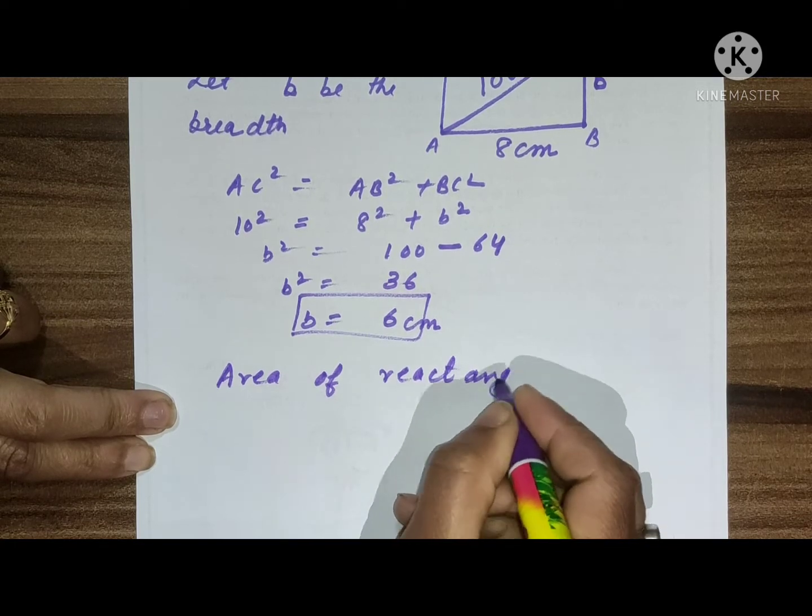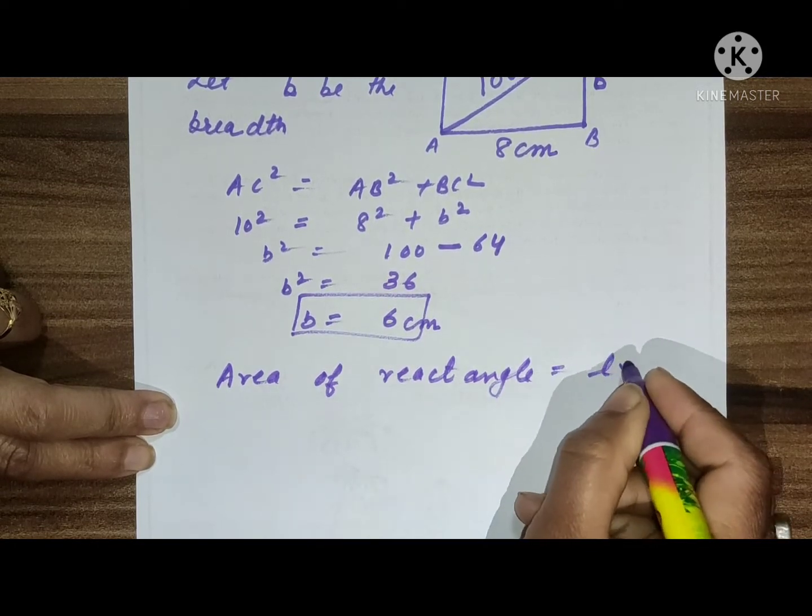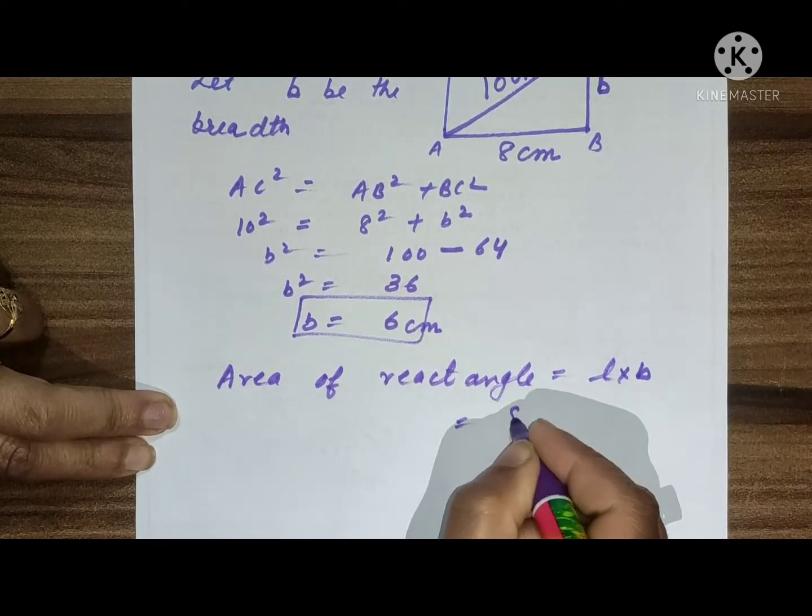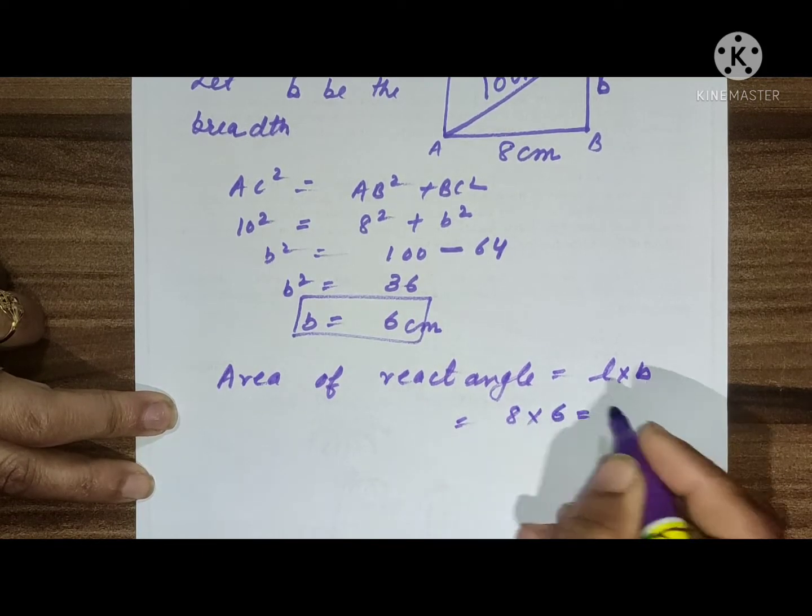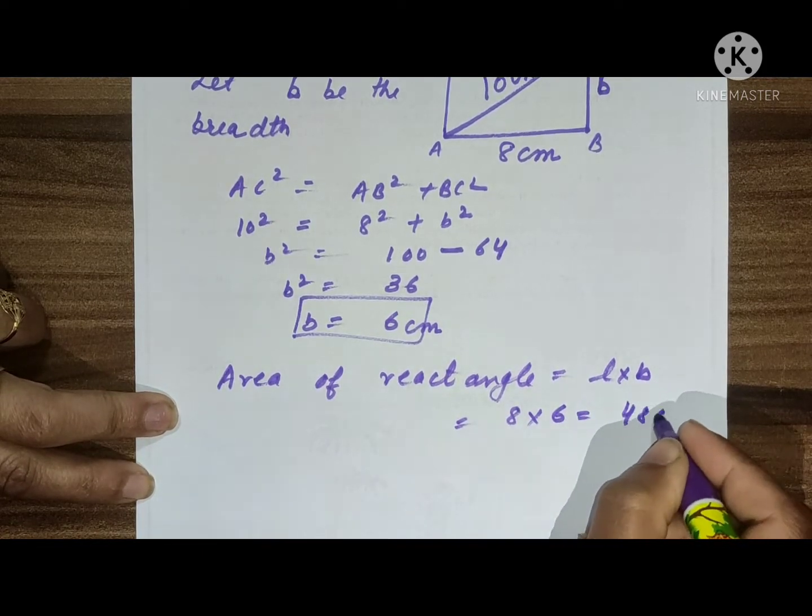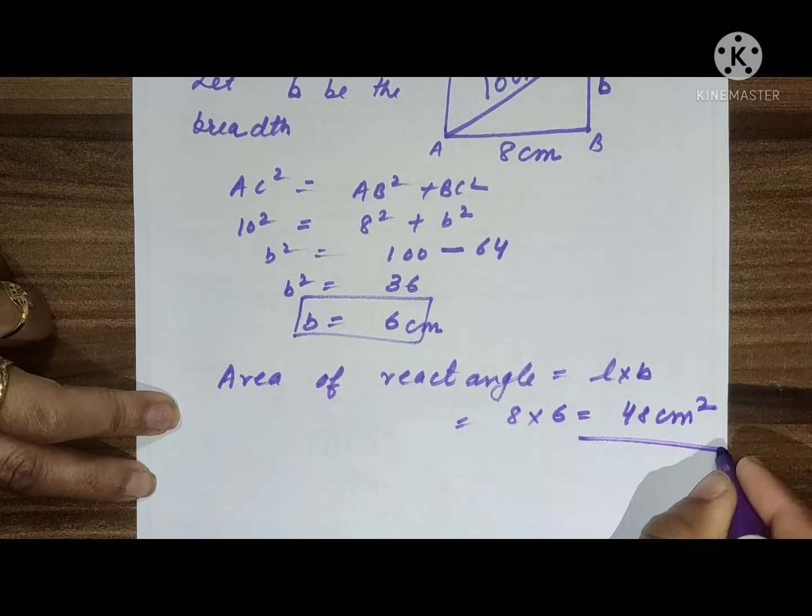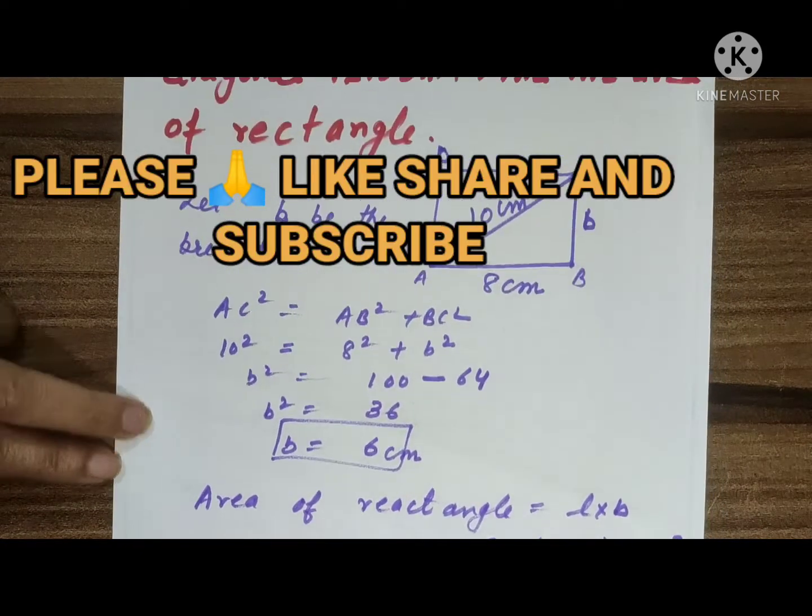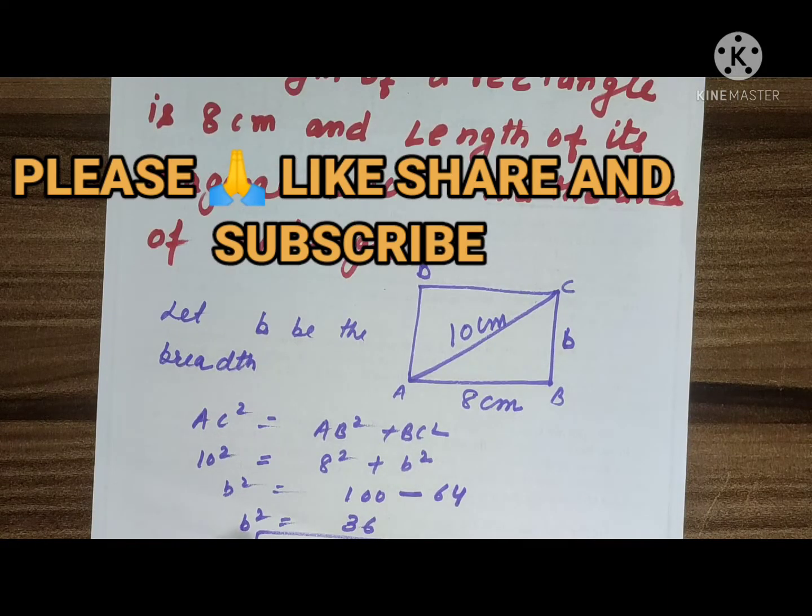rectangle, we know, is length times breadth. Length is 8 and breadth is 6, so it is 48 centimeters squared. We get the answer. So question will be asked in this way and we solve the question like this.